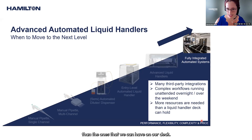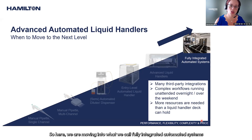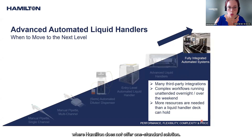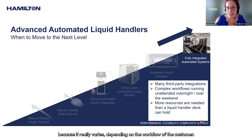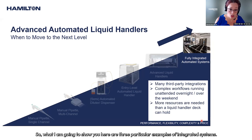Here we move into what we call fully integrated automated systems. Hamilton does not offer one standard solution — everything is customized because it varies depending on the customer's workflow. I'm going to show three particular examples of such integrated systems.